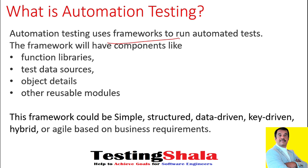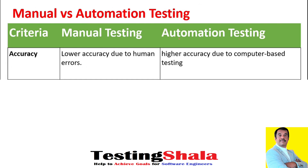Now we will try to understand the difference between manual testing and automation testing — when to use manual testing and when to use automation testing. The first criteria is accuracy. With manual testing, we have a slightly lower accuracy because a human is involved. If you execute just one, two, or ten test cases, accuracy is fine.